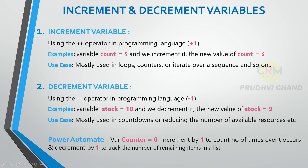Next is the decrementing variable. Decrementing a variable means decreasing its value by a certain amount. This is typically done using the minus-minus operator, which is nothing but minus one — it subtracts 1 from the current value. For example, if the current value of variable stock is 10 and we decrement it, the new value of stock is 9, because 10 minus 1 is 9.